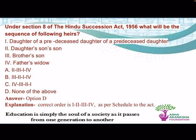Under section 8 of the Hindu Succession Act 1956, what will be the sequence of the following heirs? The correct answer is option D, i.e. none of the above. The correct order is: daughter of a pre-deceased daughter, then daughters, sons, then brother's sons, then father, widow. You can find this correct order in the schedule of the act.